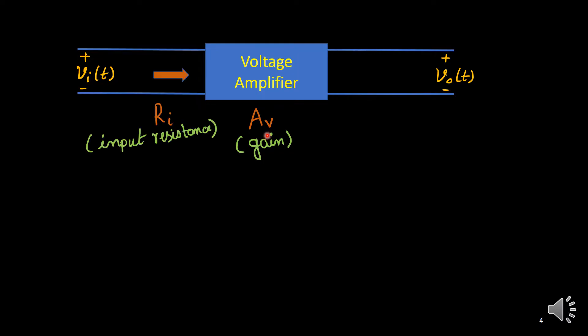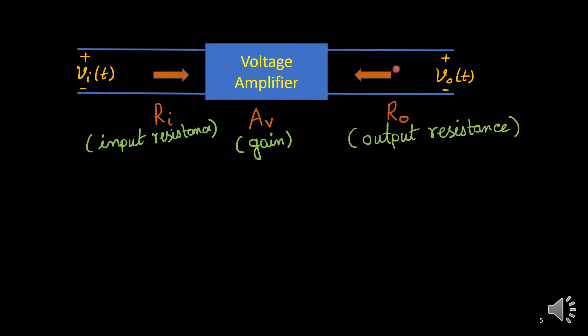We also need to consider the input impedance looking from the input side, and similarly the output impedance from the output side. So RI, R0, and AV — these three parameters define the voltage amplifier model.